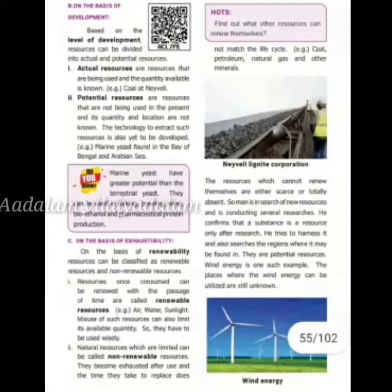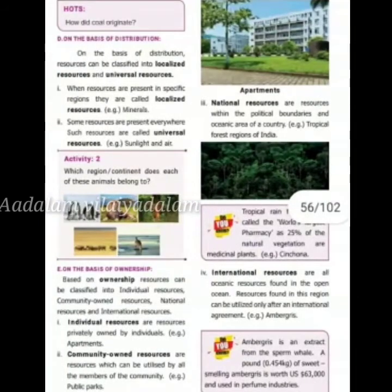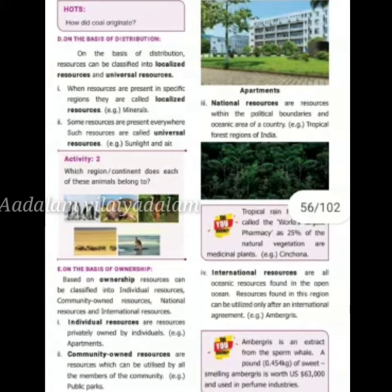On the basis of distribution, resources can be classified into localized resources and universal resources. When resources are present only in a specific region, they are called localized resources — for example, minerals. Some resources are available everywhere and are called universal resources — for example, sunlight and air.